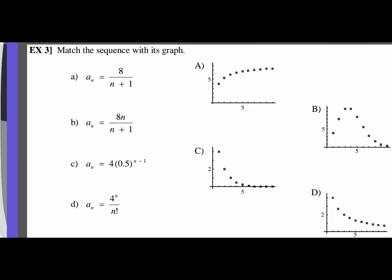For example 3, we have to match the sequence with its graph. You can do this by hand — for choice A, our term a sub n is 8 over n plus 1. Plugging in 1 gives 8 over 2, which is 4. Plugging in 2 gives 8 over 3. Plugging in 3 gives 8 over 4, which is 2. The terms are decreasing, so graph A and graph B, which are increasing, are both eliminated. We're now choosing between C and D, which look very similar.